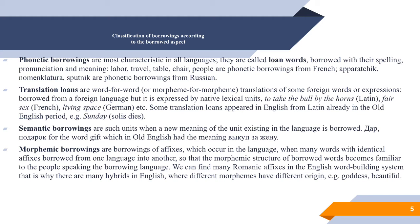Translation loans are word-for-word translations of some foreign words or expressions: the notion is borrowed from a foreign language, but it is expressed by native lexical units. For example, from Latin 'to take the bull by the horns', from German 'leaving space', etc. Some loan translations appeared in English from Latin already in the Old English period — 'Sunday' from 'Solis dies'. There are also translation loans from the languages of Native Americans such as 'pipe of peace' and 'pale-faced'.